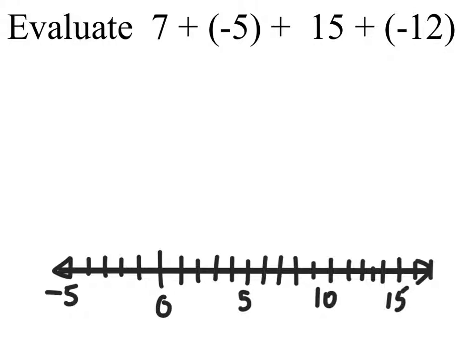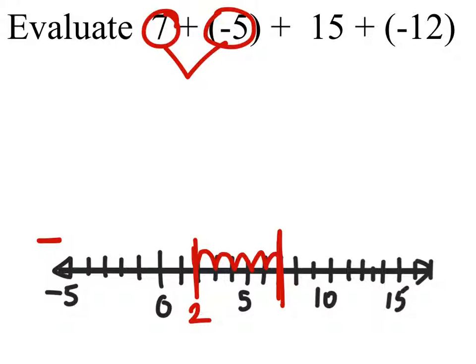So first of all we have 7 plus negative 5. We're going to start at 7 on the number line, which would be right here. Since we're adding negative 5, that tells us to go in the negative direction, which is to the left on this number line, 5 times. So I'm going to count 5 from this: 1, 2, 3, 4, 5, and that puts me at 2. So when I combine 7 plus negative 5, I get 2.